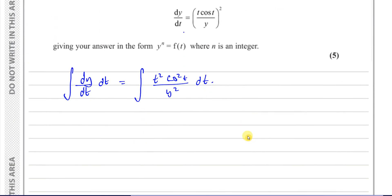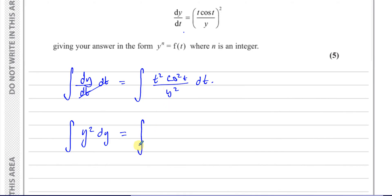These y and t terms separate: integrating y² with respect to y gives y³/3 on the left. On the right we need to integrate t² cosine²t with respect to t. But this says cosine²t, not cosine 2x as in part A, so we need to handle that difference first.